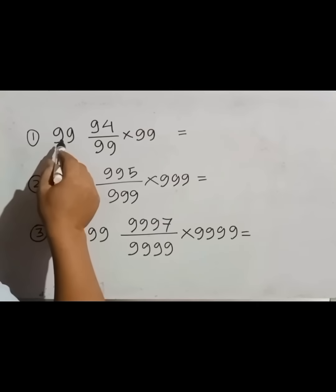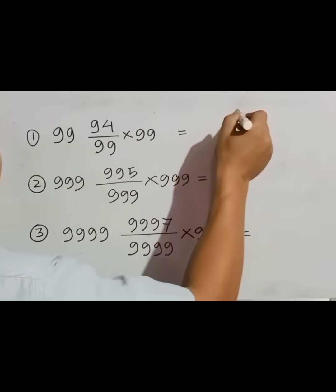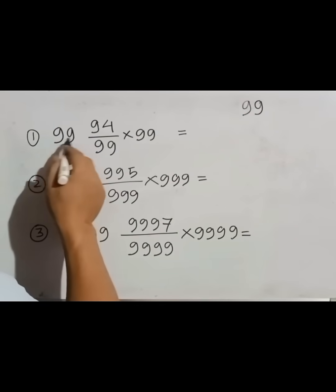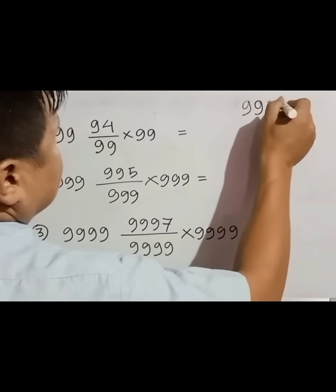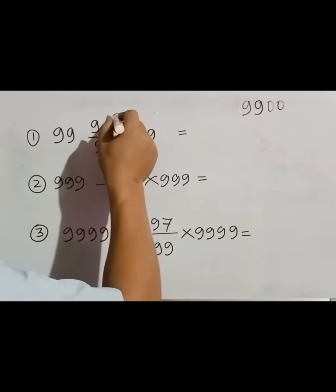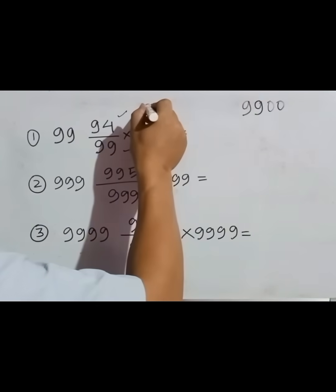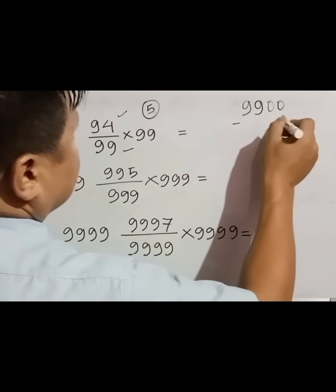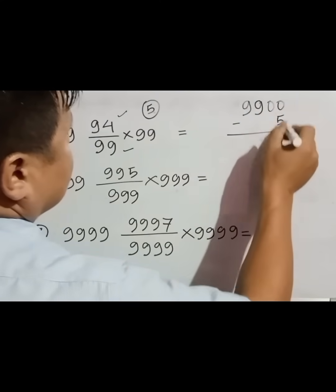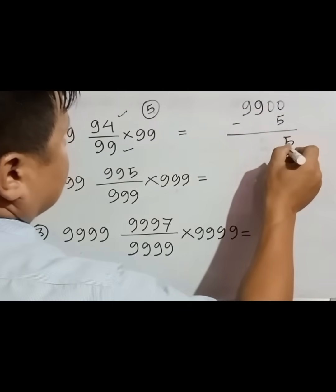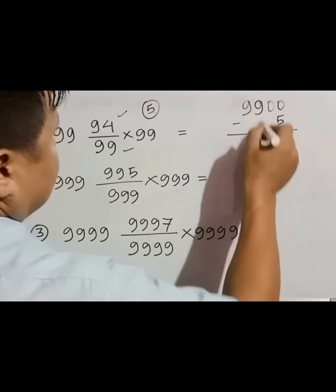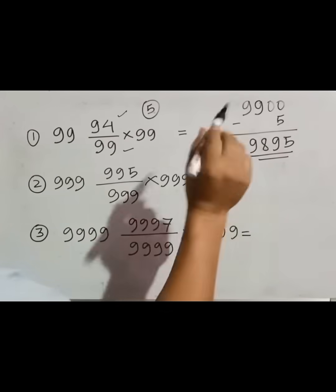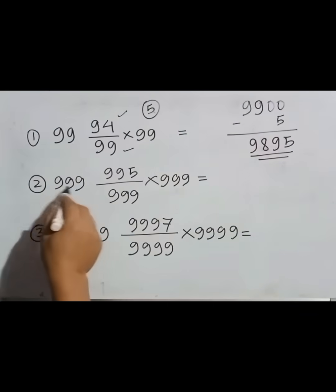In the fractional part, these two numbers are different, and there are two nines in the first number. Let us start from here. We have to write two nines because there are two nines, and since there are two nines we have to write two zeros also. Now we have to find the difference between these two numbers in the fractional part. The difference is 5 — 99 minus 94 is 5 — so from 9900 we have to subtract 5. The difference is 5, and the digits are 9, 8, 9, so the simplified value of the first question is 9895.